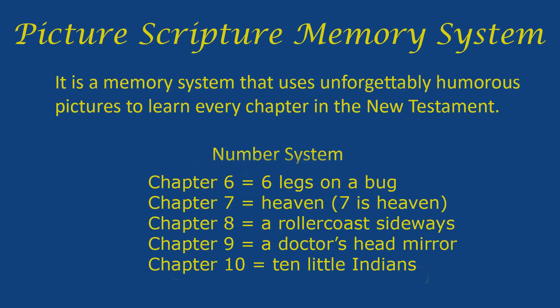The number system for chapters 6 through 10 is: chapter 6 represents six legs on a bug, so it'll be a bug scene. Chapter 7 is heaven, so this will be a heavenly scene. Chapter 8 is a roller coaster — if you turn your head sideways, you can see the 8. Chapter 9 will be a doctor's head mirror, so it'll be a doctor scene with a mirror looking like the number 9 on the top of a doctor's head. And chapter 10 will be Ten Little Indians.